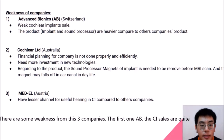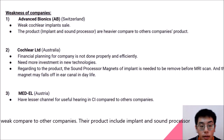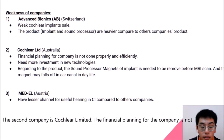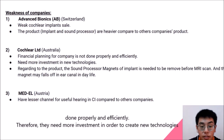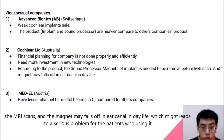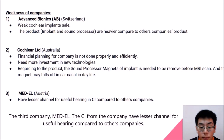There are some weaknesses from these three companies. For Advanced Bionics, cochlear implant sales are quite weak compared to other companies, and the product including the implant and sound processor is heavier compared to other companies, which may give less comfort to the patient. For Cochlear Limited, financial planning is not done properly and efficiently, so they need more investment to create new technologies. Regarding their product, they need to remove the magnet before using an MRI scan, and the magnet might also fall off in the ear canal in daily life, which could lead to a serious problem for the patient. For MED-EL, their cochlear implants have fewer channels compared to the other companies.